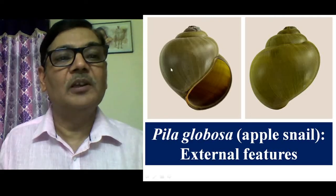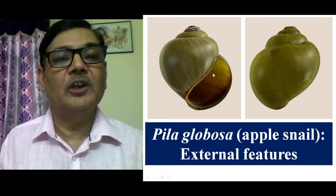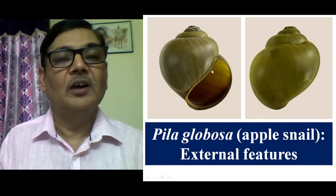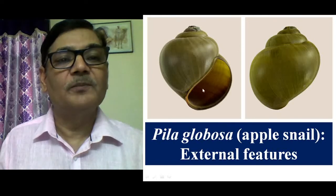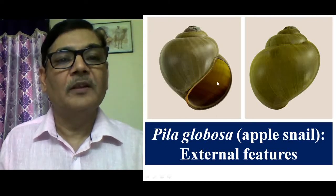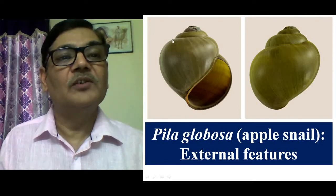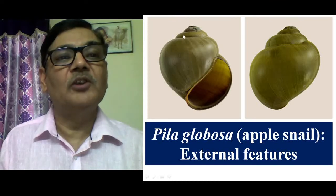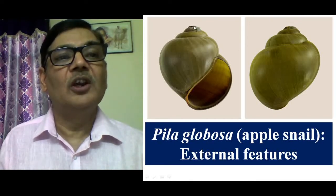Looking at the external features of this animal, in this diagram you can see only the shell portion — it is actually an empty shell, the internal organs are totally lacking. This area is the mouth of the shell, the only large opening. The other opening is very minute, located in the corner, called the umbilicus. Through this exit the animal can protrude its anterior head portion along with the foot. This is the major coil of its body, called the body whorl. Just above it is the penultimate whorl, and the uppermost rounded structure is called the apex — the oldest whorl of its body.